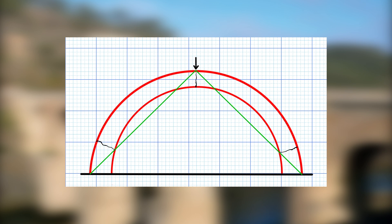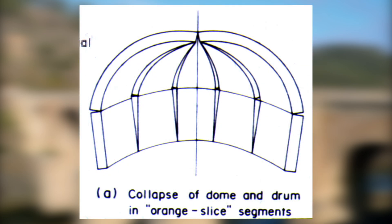The issue then becomes, what happens when the load path falls outside of the arch material? Well, that's when tension develops, and those ancient building materials develop things like cracks, and ultimately becomes unstable.